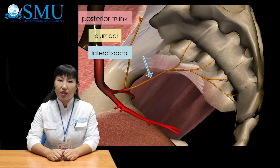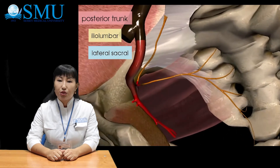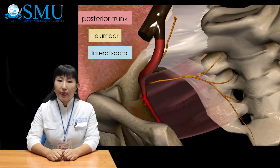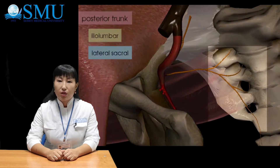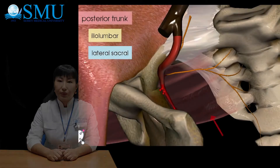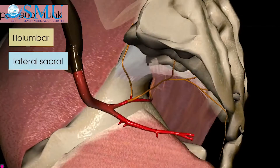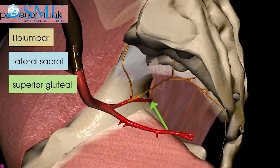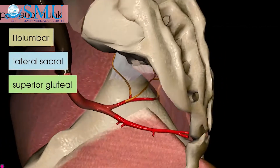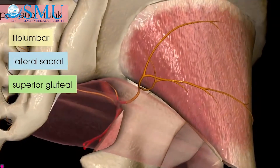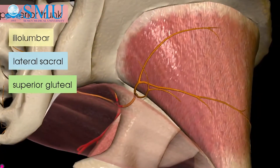The lateral sacral artery descends along the pelvic orifices of the sacrum laterally, supplying the levator ani, piriformis, and trunks of the sacral plexus. The superior gluteal artery exits the pelvis through the suprapiriform opening to the gluteal muscles, accompanying the superior gluteal nerve, and supplies the gluteus medius and gluteus minimus.